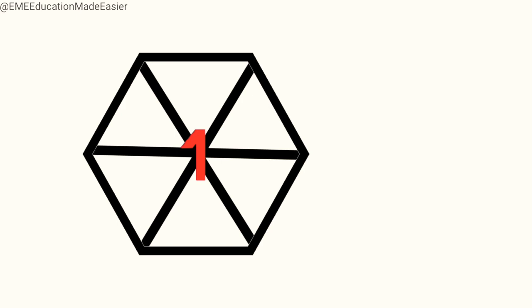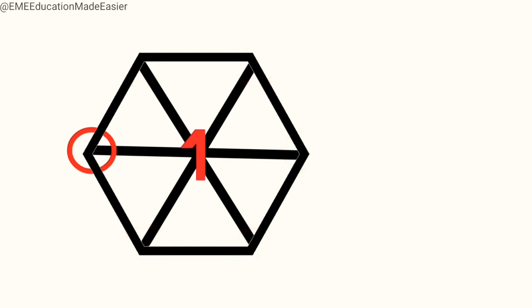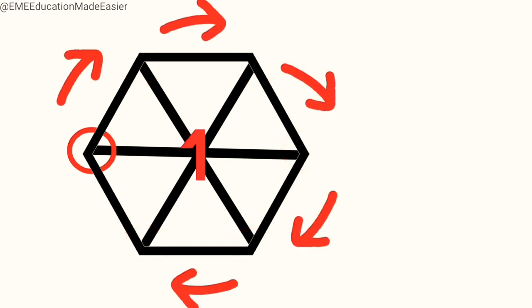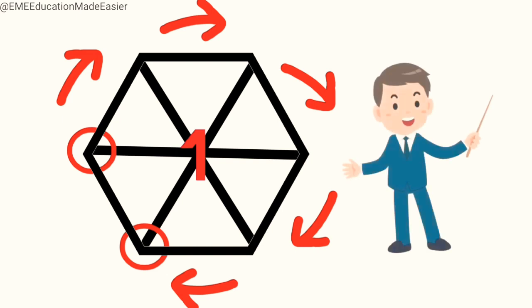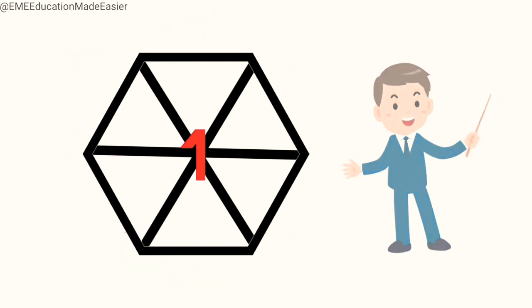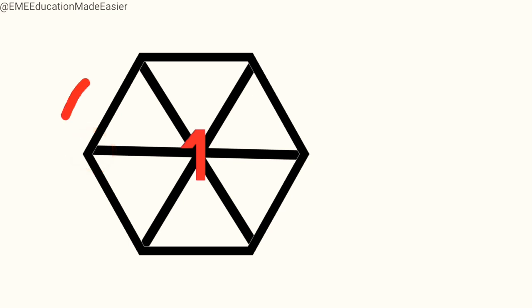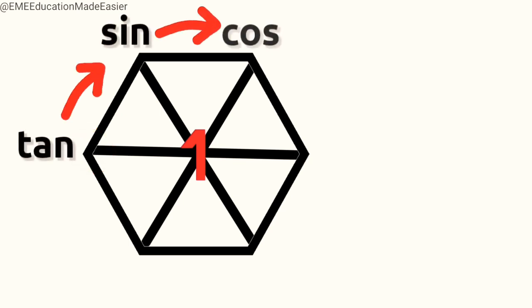To know the formulae, we give the six function names to each of the six vertices. There is a particular way in which we need to write it. We start writing from this vertex, go around the hexagon and end at this vertex. Now let's see how we write the six functions at the six vertices. You just need to remember one formula: tan is equal to sine upon cos. We start at this vertex and write tan, sine, cos in the clockwise direction.